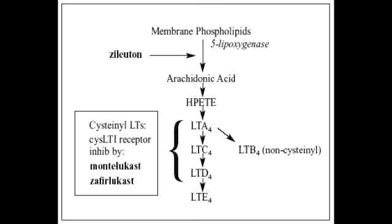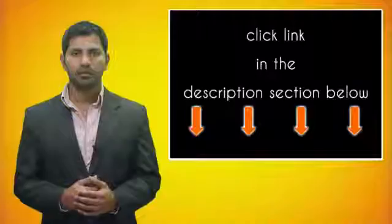What is the mechanism of action of zileuton? The mechanism of action of zileuton is to inhibit the 5-lipoxygenase pathway. This drug basically blocks the conversion of arachidonic acid to the leukotrienes.